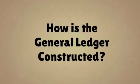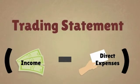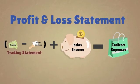How is all the data from our subledgers constructed in the general ledger? This part seems hard, but in fact it's just simple arithmetic. First, we have our trading statement, which is our income minus direct expenses. The second is the profit and loss statement: it is your trading statement plus other income minus indirect expenses.